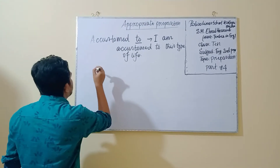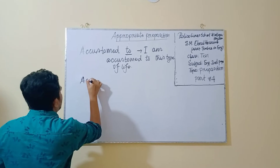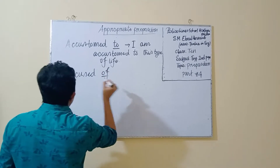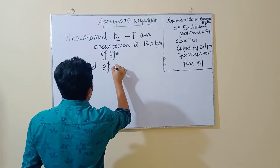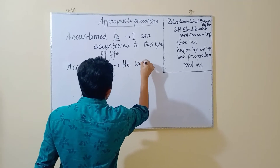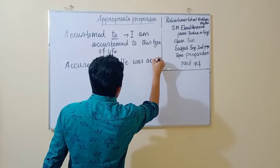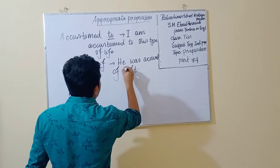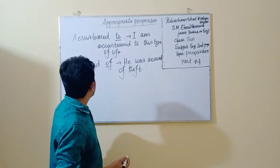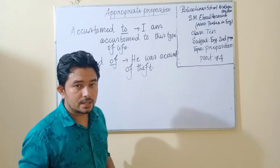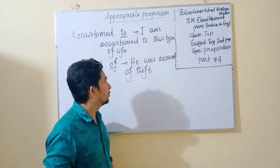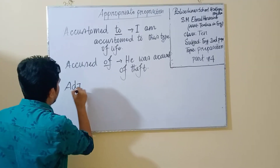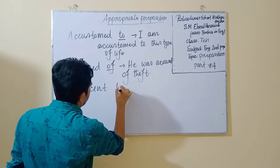Another appropriate preposition: the word 'accused' is followed by the preposition 'of'. For example: He was accused of theft.